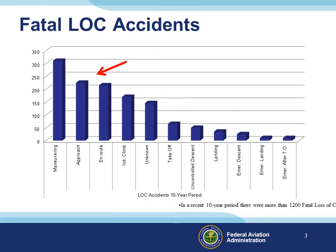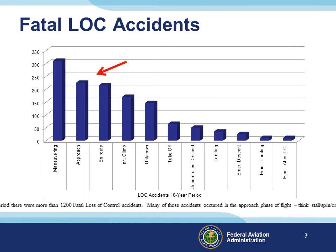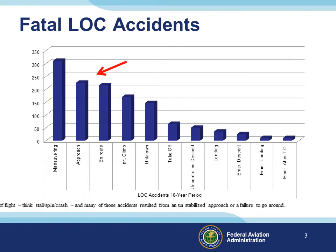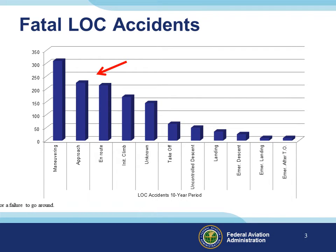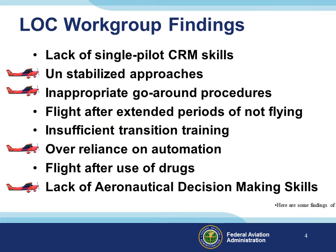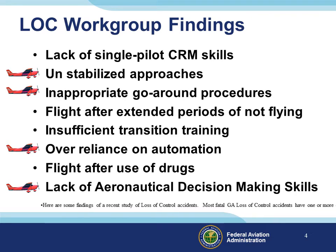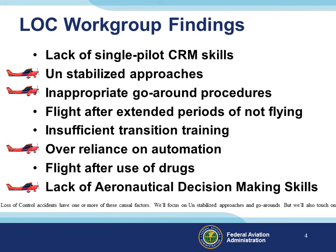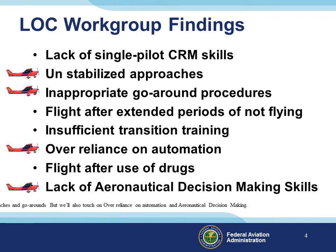In a recent 10-year period, there were more than 1,200 fatal loss of control accidents. Many of those accidents occurred in the approach phase of flight — think stall-spin crash — and many resulted from an unstabilized approach or a failure to go around. Most fatal GA loss of control accidents have one or more causal factors, and we'll focus on unstabilized approaches and go-arounds, while also touching on over-reliance on automation and aeronautical decision making.